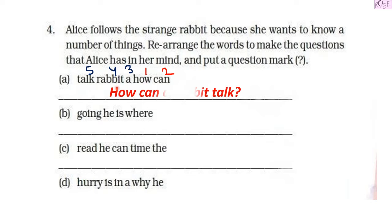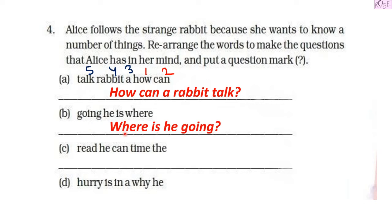Next we have the words: 'going he is where.' The word that poses the question is 'where,' so it comes first. When we pose a question, the helping verb comes first, then the subject, then the main verb. So the sentence is: Where is he going?